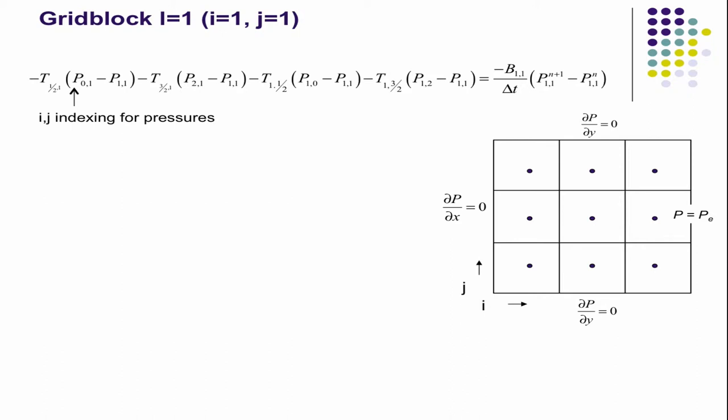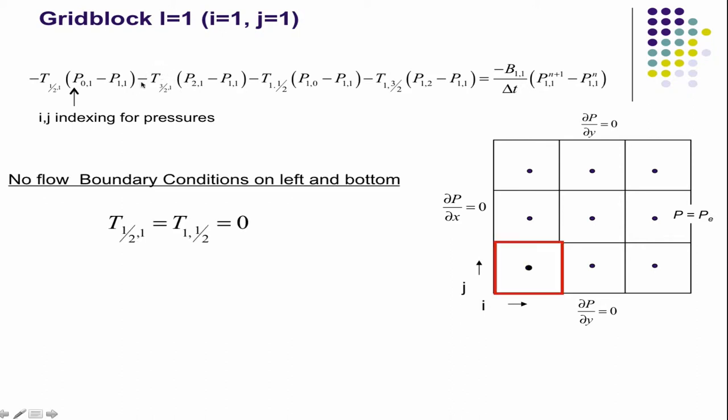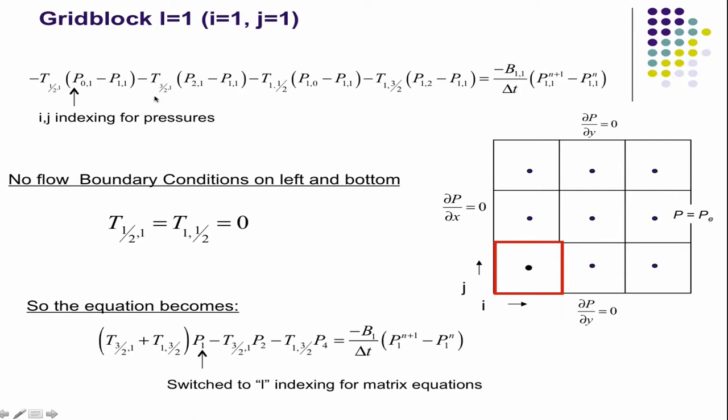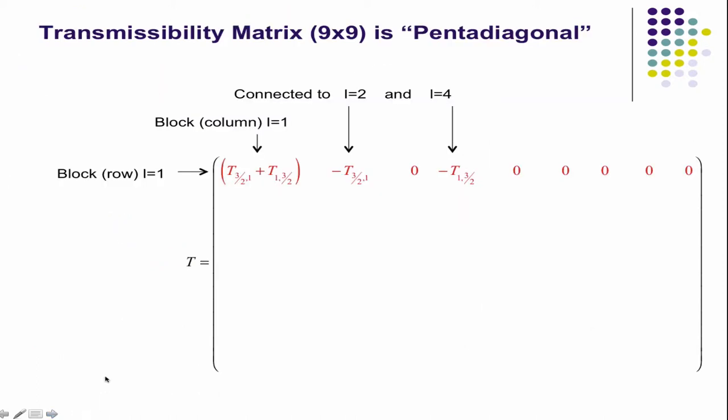And so this is the, it may be hard for you guys to see, this is the, oh, sorry. That's the transmissibility, I equals three halves, J equals one, and this is the transmissibility at I equals one, J equals three halves. So that's these two guys, right? And these two go away because there's no flow outside of that. And so then finally the equation becomes this. And if you stick that into the first row of the transmissibility matrix, this is what you get.